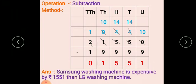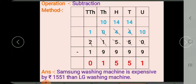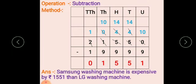Operation: subtraction. When we subtract two numbers, we first write down the bigger number and subtract the smaller number from it. So 21,550 minus 19,999.